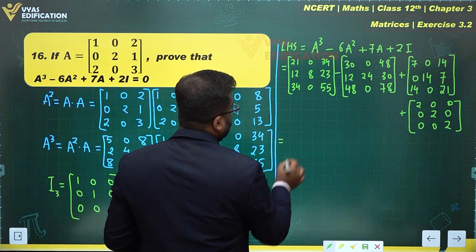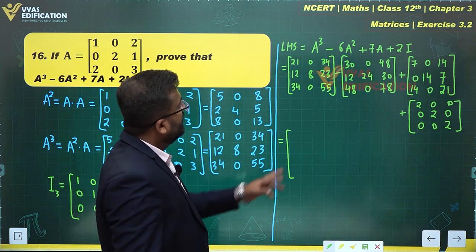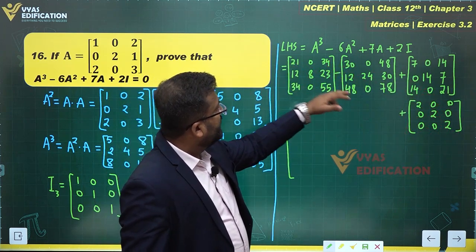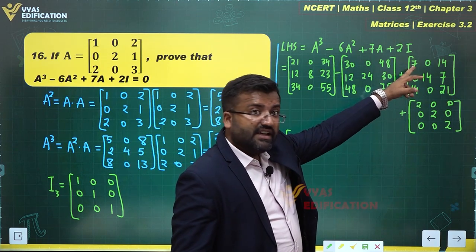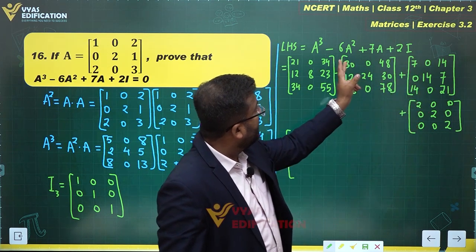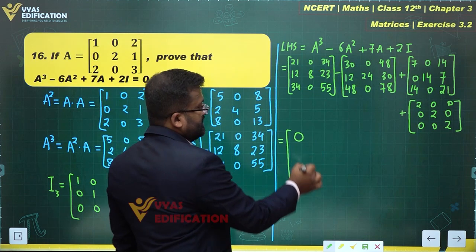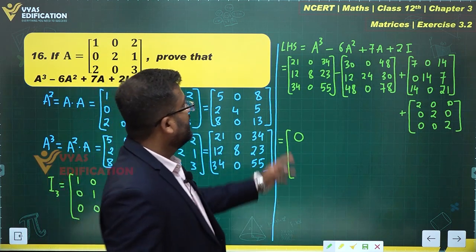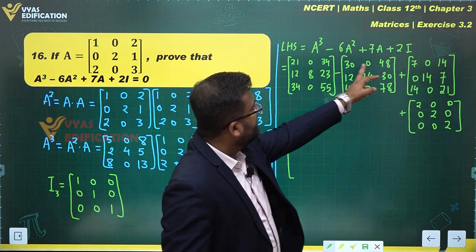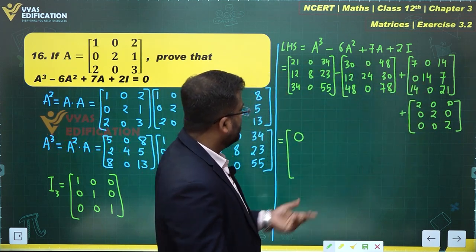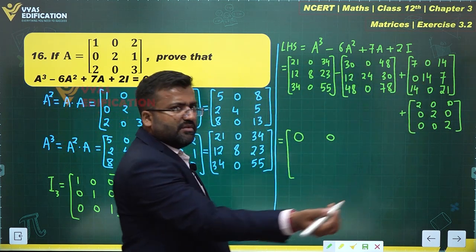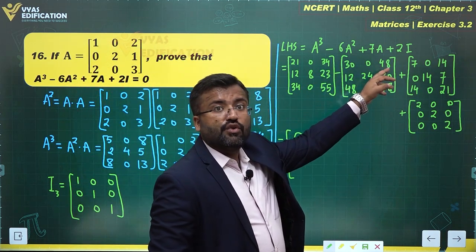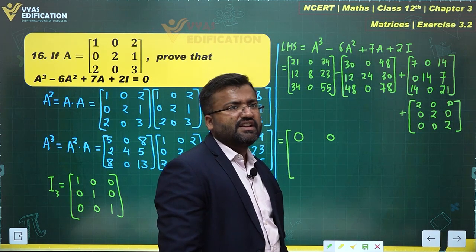Now we simply add all these matrices together. For the first column elements: 21 - 30 + 7 + 2 = 0. The off-diagonal element: 0 - 0 + 0 + 0 = 0. For the element 34 - 48 + 14 + 0 = 0.